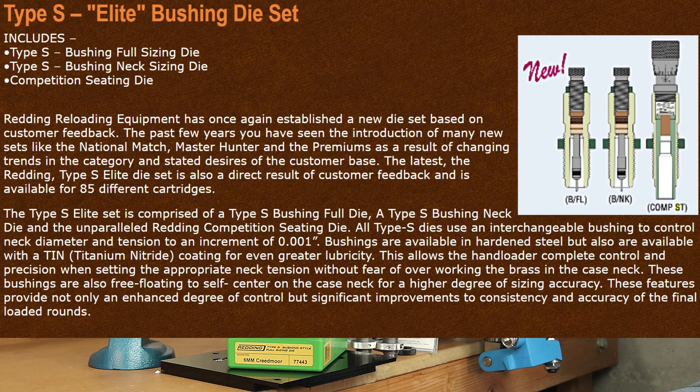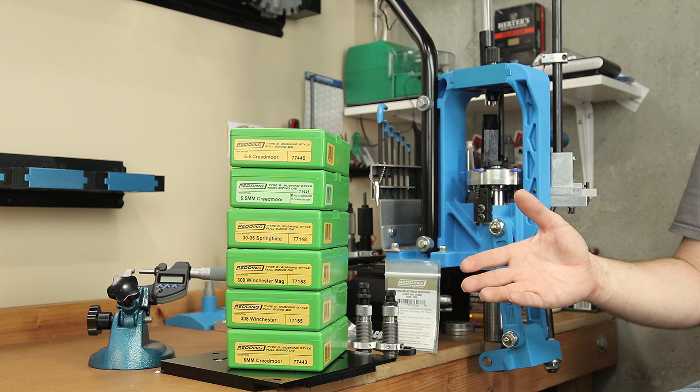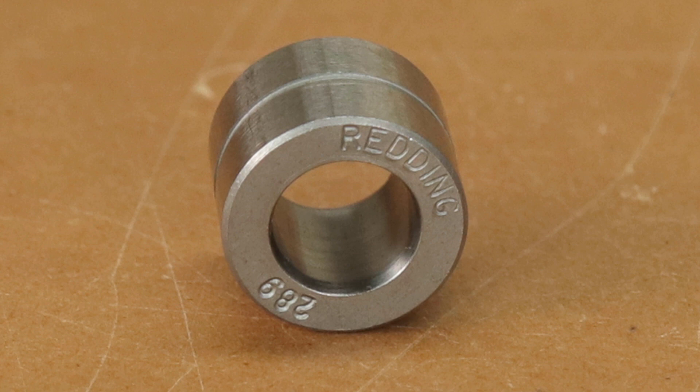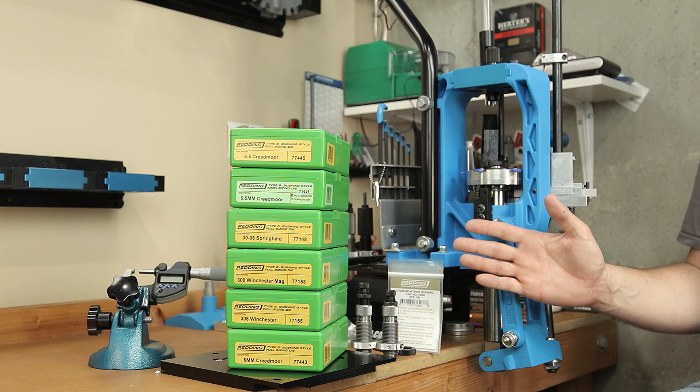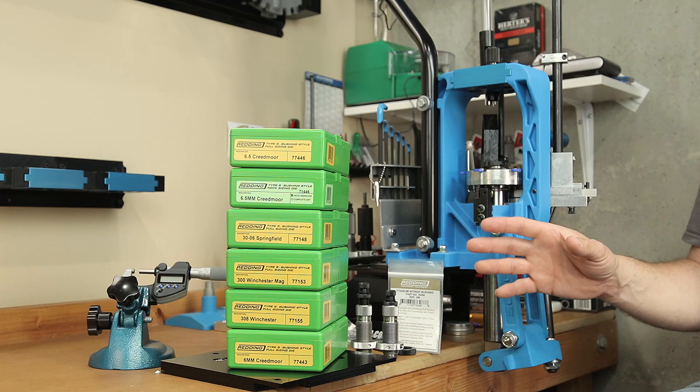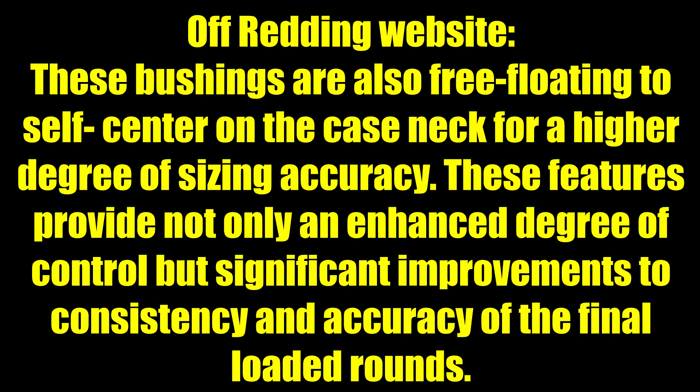All the Type S dies use an interchangeable bushing to control the neck diameter and less the neck tension. Bushings from Redding are available in 1,000th increments, are made of hardened steel, but some are also available with a titanium nitride coating for supposedly greater lubricity. Though don't go thinking you're going to stop using case lube. What you're going to commonly hear when people talk about bushing dies is, these bushings are allowed to free float or self-center on the case neck. Advertising on their website will tell you that these bushings are free-floating, so they self-center on the case neck for a higher degree of sizing accuracy. These features provide not only an enhanced degree of control, but significant improvements to consistency and accuracy of the final loaded round.